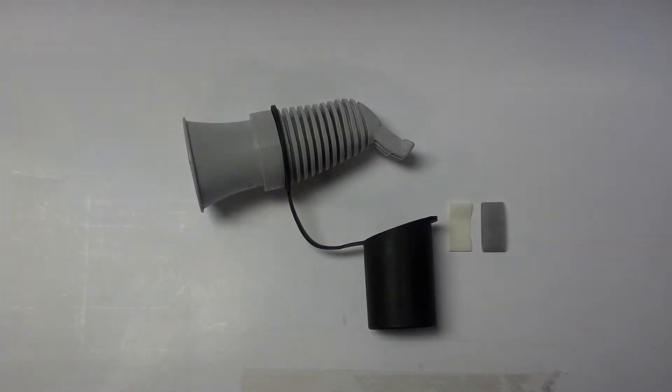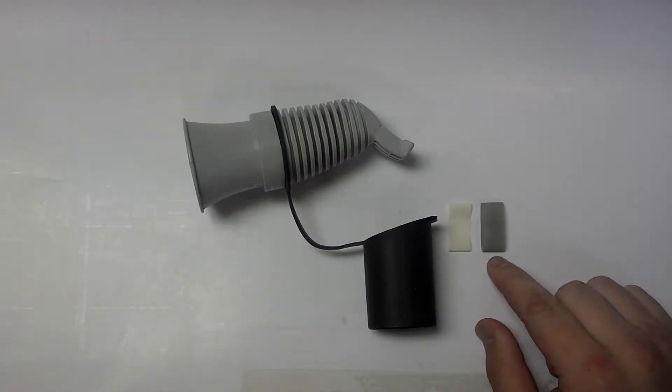Replacing the band on your power howler coyote call. Now there's two different bands you can use for this call: the white and the gray.